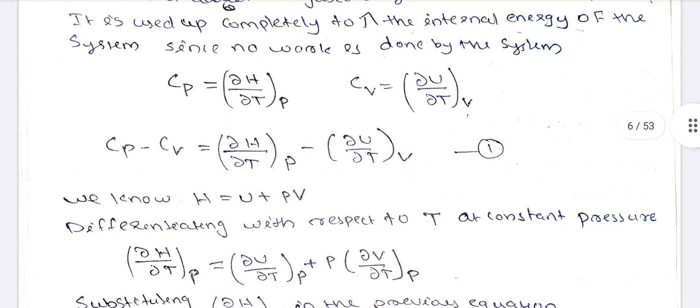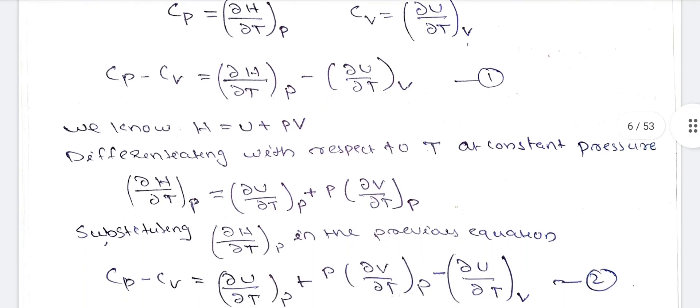Next, we derive Cp minus Cv. We start with the equation delta H is equal to delta U plus P delta V, and we differentiate this equation to find the relationship between Cp and Cv.